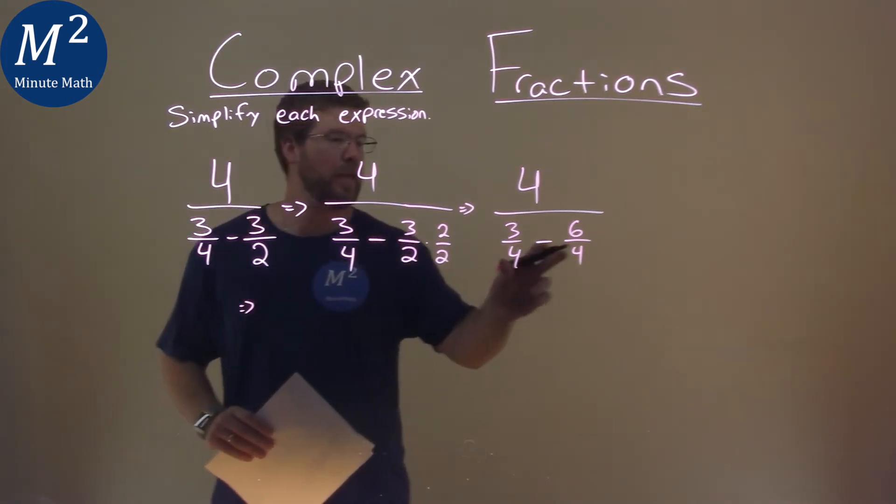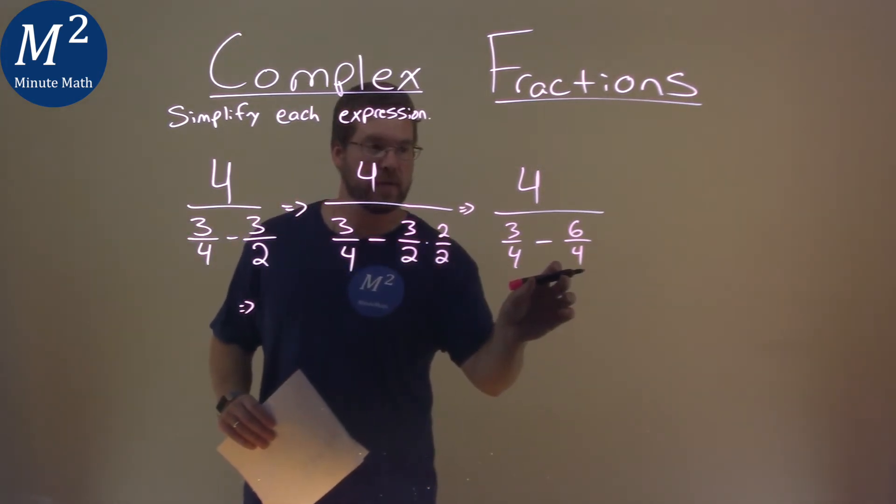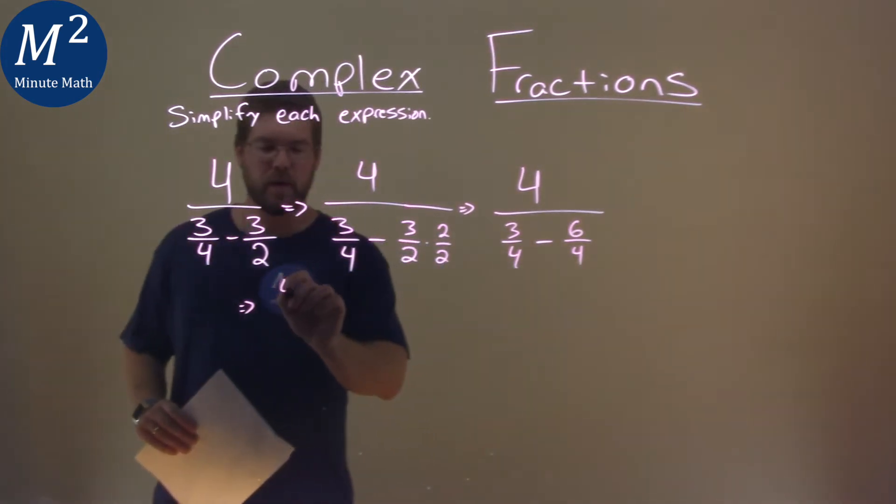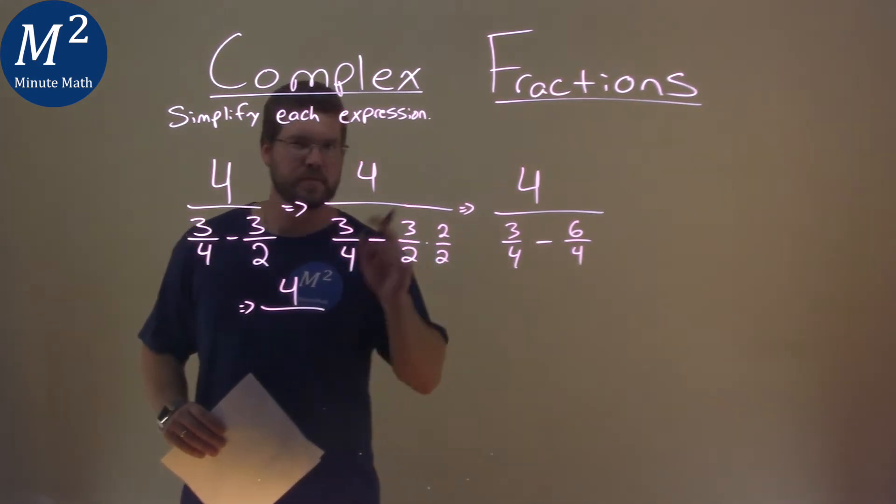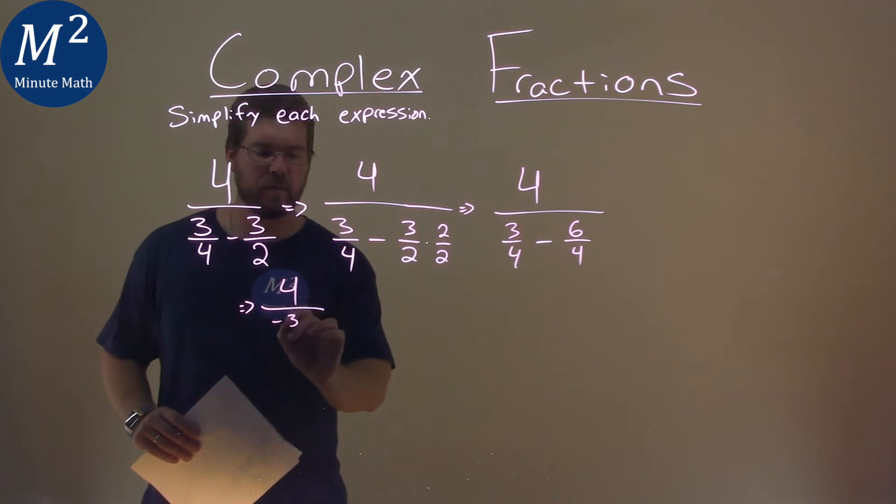Continuing down here, we then now combine this fraction right here, 3 fourths and a 6 fourths. So 4 is still up top, and 3 fourths minus 6 fourths, we subtract the numerator with a negative 3 fourths here.